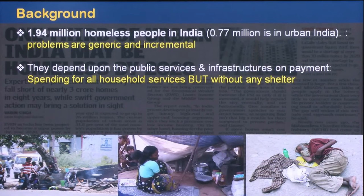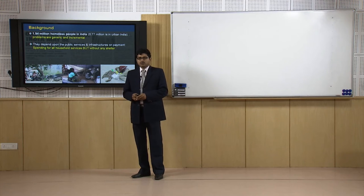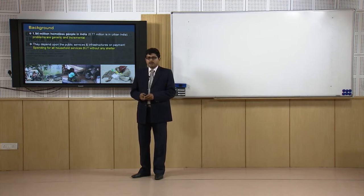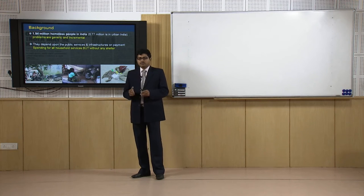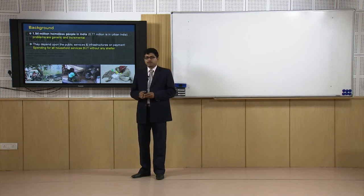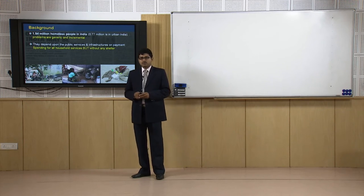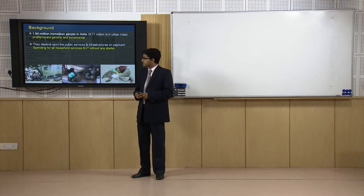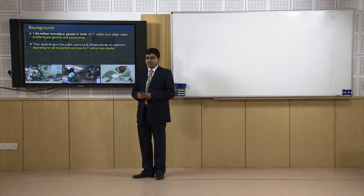Basically, pavement dwellers depend upon public services and infrastructure on the pavement. It is very surprising to know that other economic groups — middle income, higher income, even lower income — when given the opportunity to access public services like water supply on a pavement basis, they make protest. But pavement dwellers, when they take any public service like sanitation or sometimes water, they have to pay for it. They basically survive on public services and public amenities by and large.